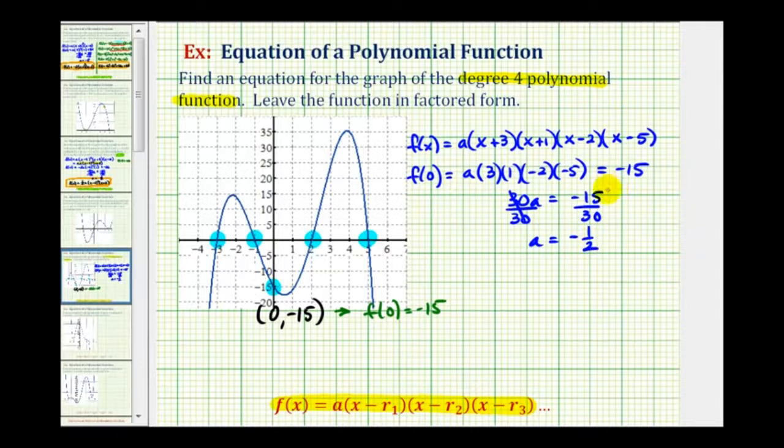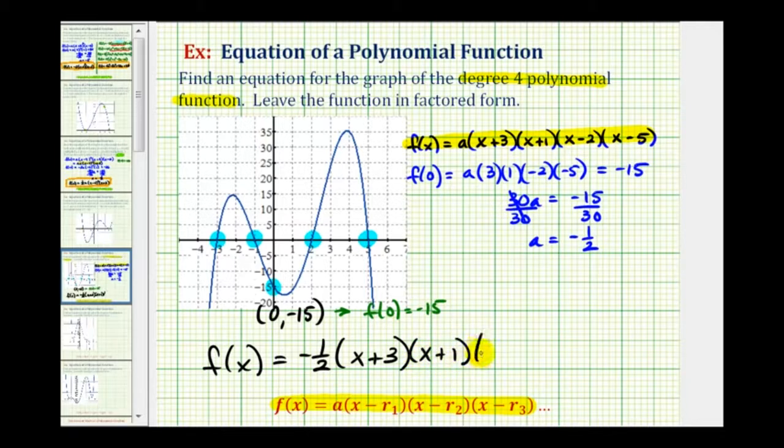So now we have all the information we need to write our polynomial function in factored form. Using this form of our function, we'll substitute negative one-half for a. So we'd have f of x equals negative one-half times the quantity x plus three, times the quantity x plus one, times the quantity x minus two, and times the quantity x minus five.